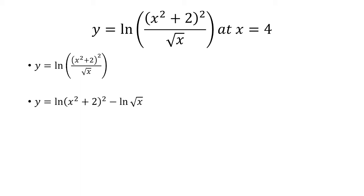We know when we have natural log of x to the n, that's just n natural log x. So here, the square root of x is really x to the 1 half power. So the 2 here and the 1 half are going to come in front of the logs. We have 2 log x squared plus 2 minus 1 half log x.